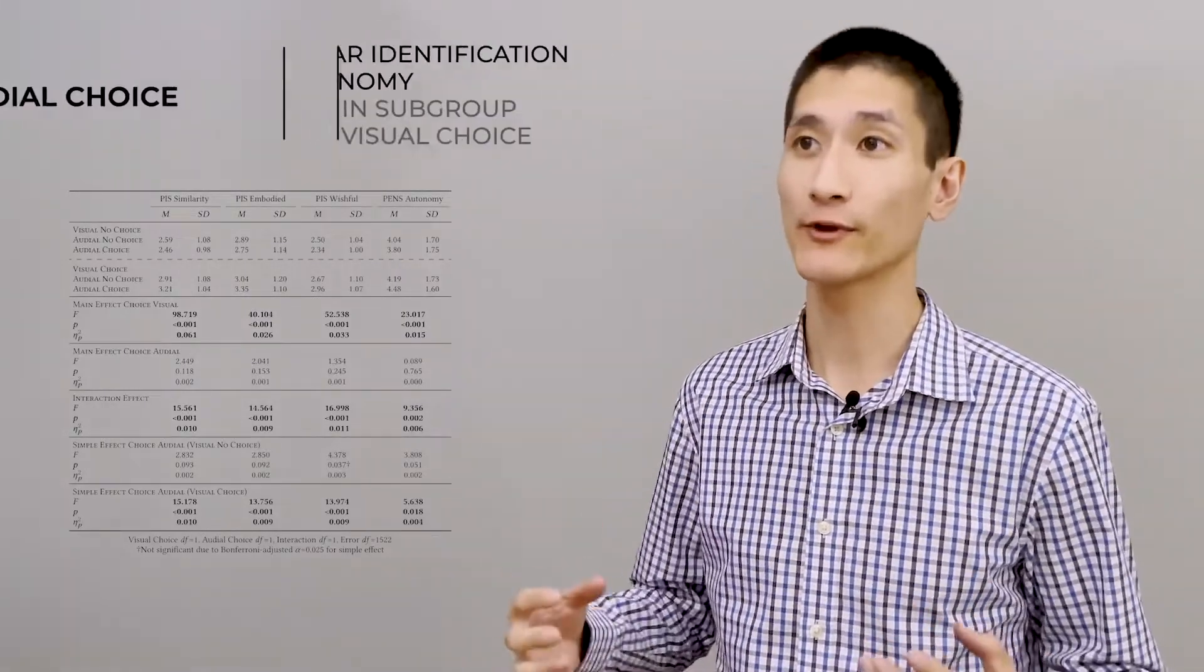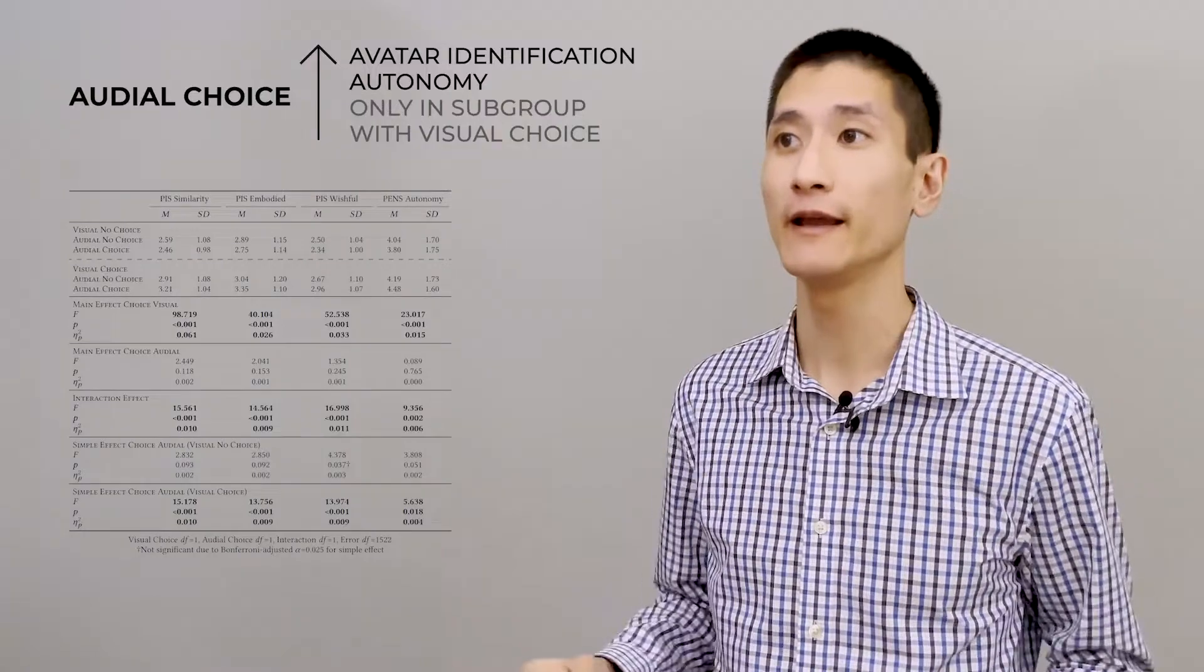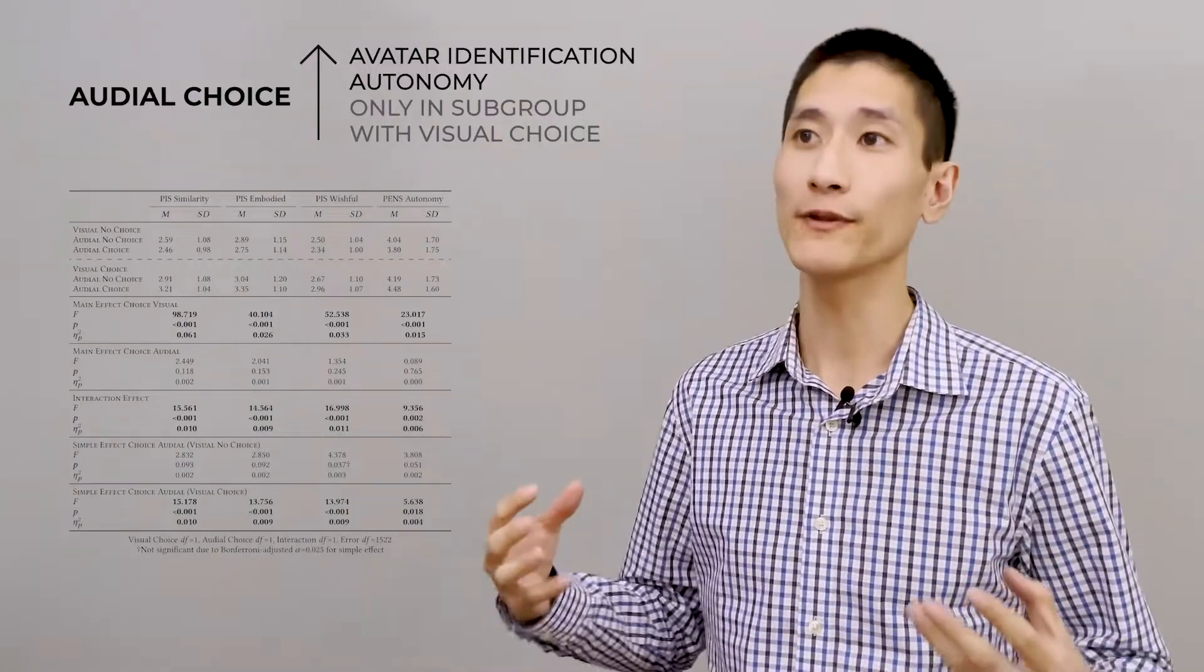Participants with visual choice experienced higher avatar identification and autonomy. Participants with audio choice experienced higher avatar identification and autonomy, but only within the group of participants who had visual choice available.